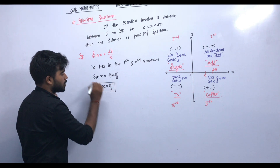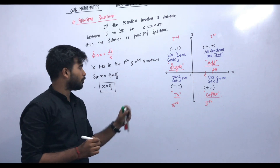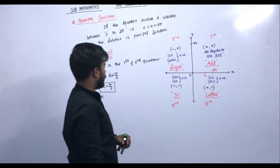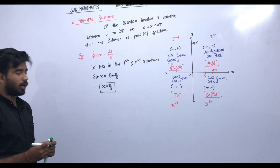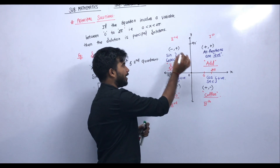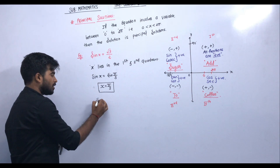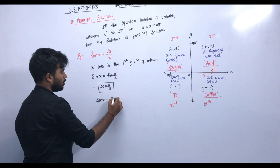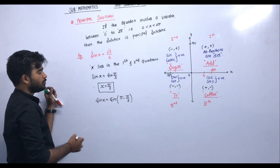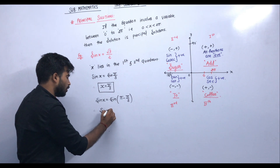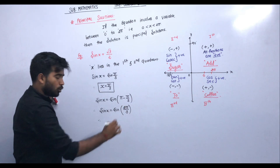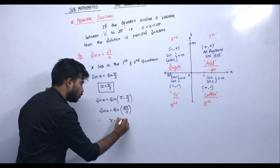So the first value of the principal solution is x = π/3. This is in the first quadrant, where the angle is less than 90°. Now we need to go to the second quadrant, which is greater than 90°. In the second quadrant, we use 180° minus the reference angle: 180° − 60° = 120°, which equals 2π/3. Therefore x = 2π/3.